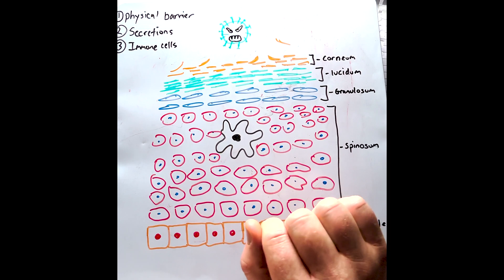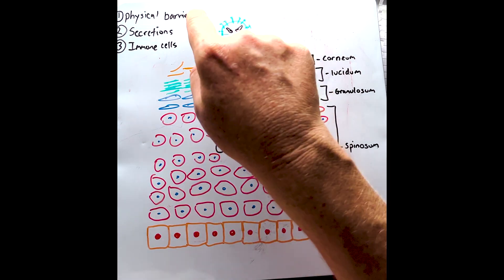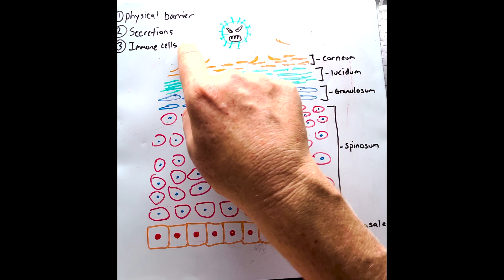There are three main roles that the epidermis plays to provide this innate defense: a physical barrier, secretions, and immune cells.